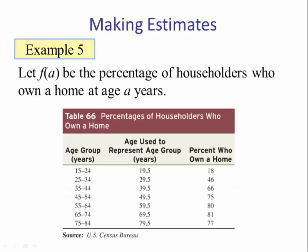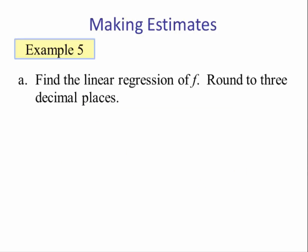Our last example, Example 5: Let f of a be the percentage of households to own a home at age a years. So here we have the age group 15 to 24. We will use 19.5, the midpoint, to be our independent variable. And then our dependent variable is the percentage you own a home. So for this age group, 18% own a home.